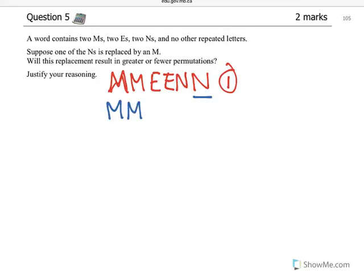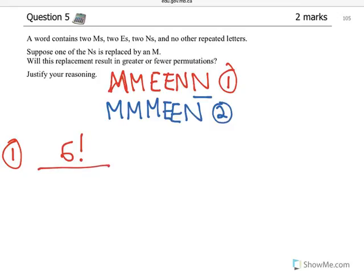So we now have three M's, the two E's, and just the one N. So they're saying will this result in greater or fewer permutations? So let's do the first one. The rule is for permutations, we do the number of items factorial divided by factorials for every repeated amount. So there's three repeated with two, and there's six total. So it starts as six factorial over two factorial times two factorial times two factorial.